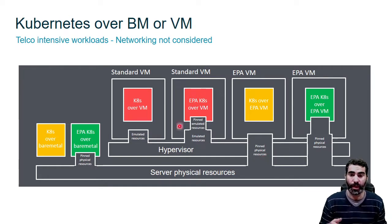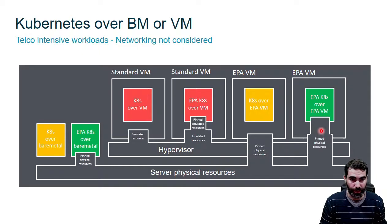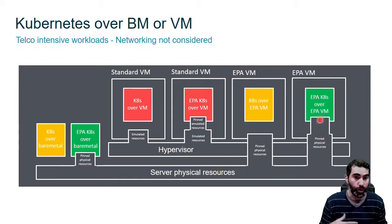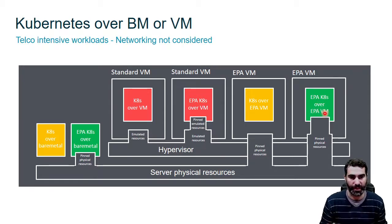And in an equivalent case to the EPA bare metal setup, if we install an EPA Kubernetes over an EPA VM, our pods will be using dedicated physical resources — because the VM has physical resources obtained through CPU pinning, and our pods are also getting those resources pinned. So they are going to get the maximum performance available in our system.